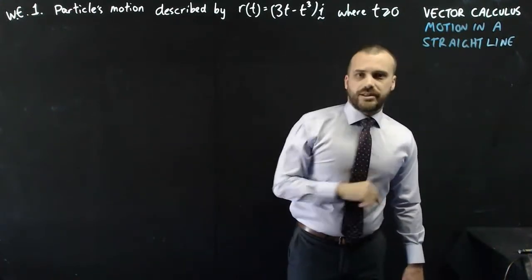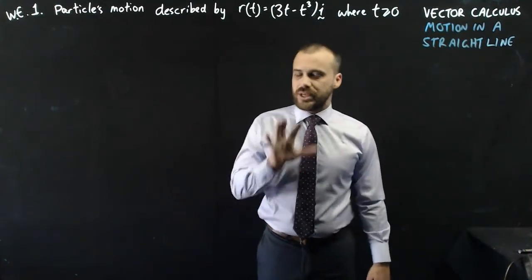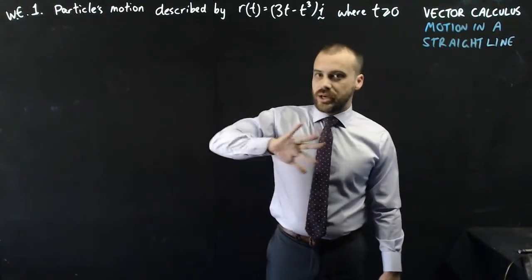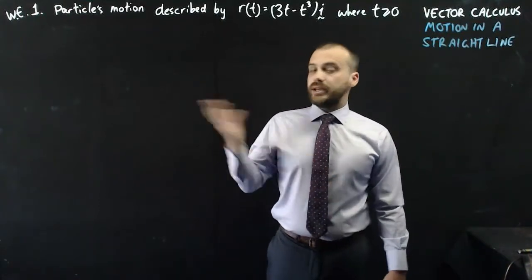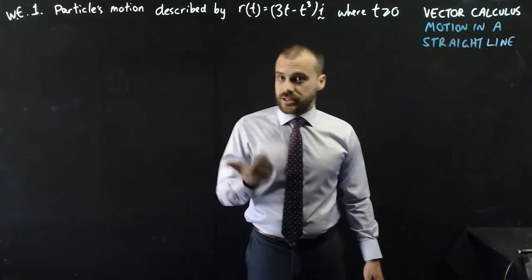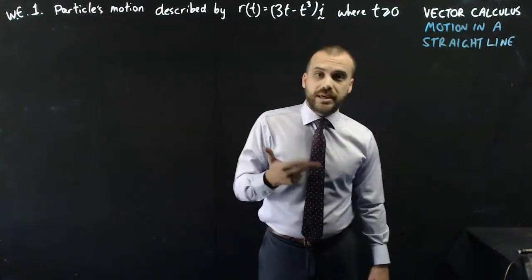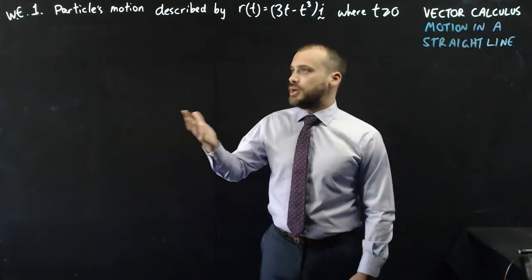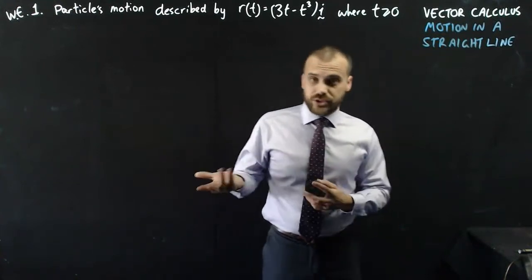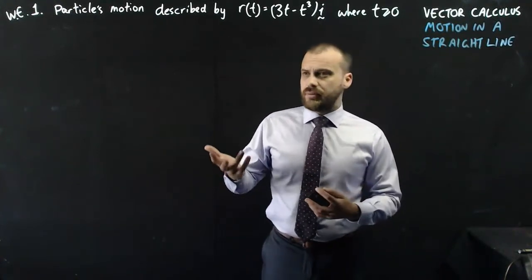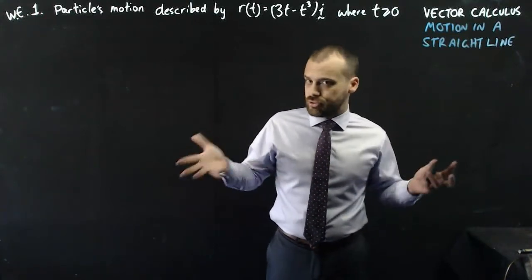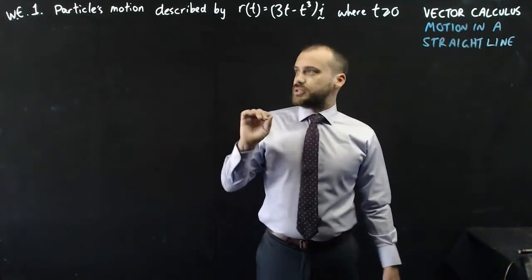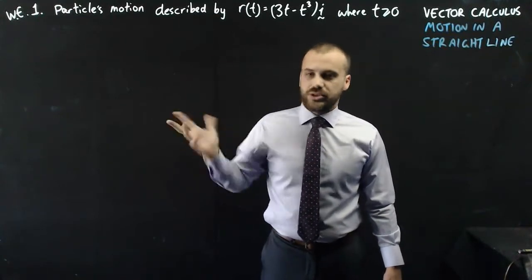Where t is greater than zero, time is only positive in this particular question. Negative time doesn't make any sense in this question. You can have negative time, but just not in this one. So I might ask you velocity, acceleration. I might ask you for its speed. I might ask you for how far did it travel in a certain amount of time, or at a certain time, how far is it from the origin. Let's do a bunch of them.